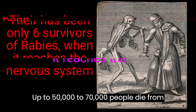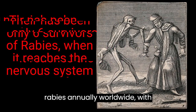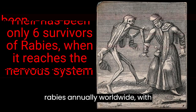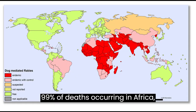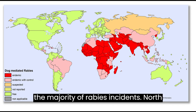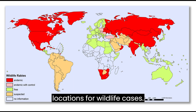Up to 50,000 to 70,000 people die from rabies annually worldwide, with 99% of deaths occurring in Africa, India, and South Asia, where dogs account for the majority of rabies incidents. North America, Russia, and North Asia are the main locations for wildlife cases.